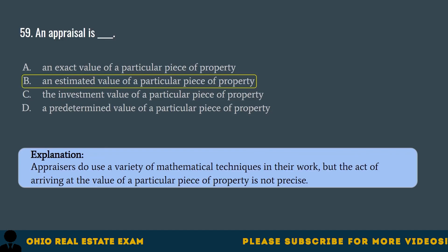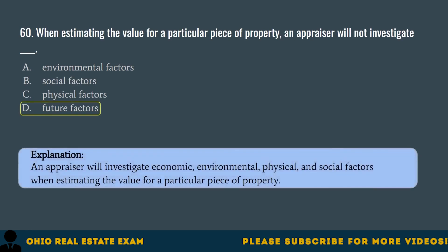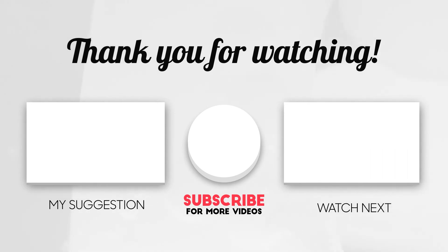Question 60. When estimating the value of a particular piece of property, an appraiser will not investigate... A. Environmental factors. B. Social factors. C. Physical factors. D. Future factors. The correct answer is D. Future factors. An appraiser will investigate economic, environmental, physical, and social factors when estimating value. Thank you for watching this video — please share it with your friends and check out other helpful videos. Good luck in your real estate journey.